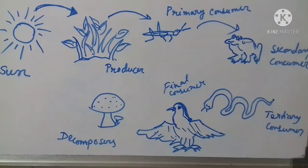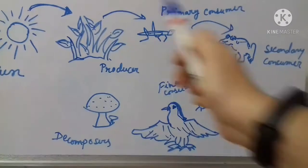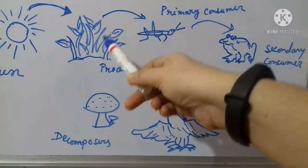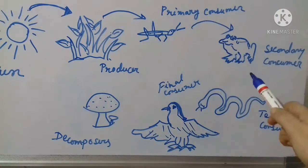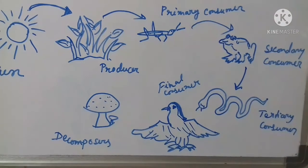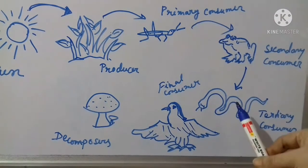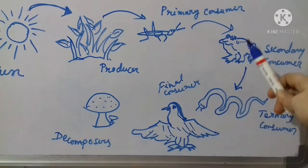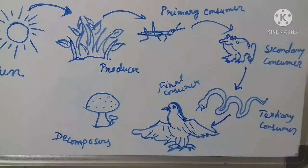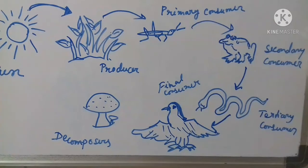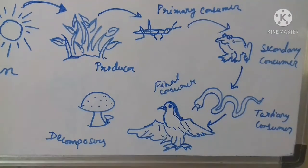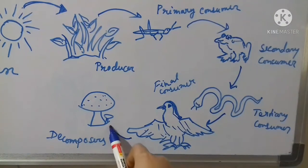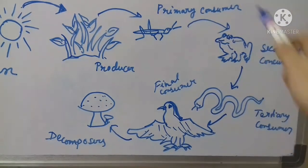After that I draw a frog here, which will be the secondary consumer. The energy from the sun flows through the green plant to the primary consumer grasshoppers, then it is transferred to the frog. After that the energy is transferred to the tertiary consumer, which is the snake, because snake eats frog. Then the energy is transferred to the apex predator, which is the eagle or vulture. And when all the consumers die, the fungi, algae or bacteria — which are the decomposers — will decompose their bodies.